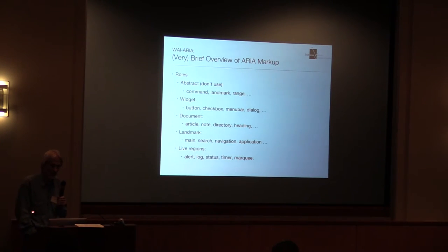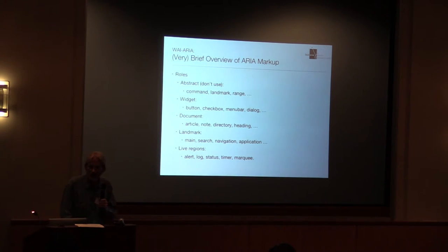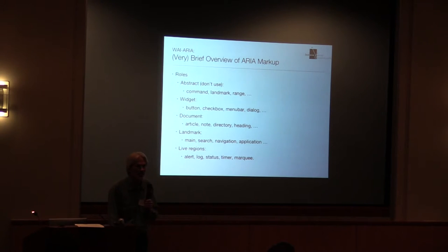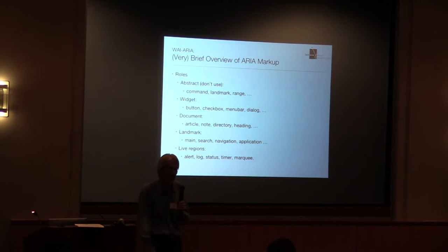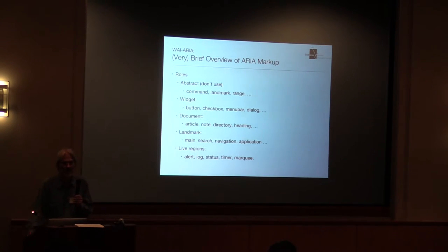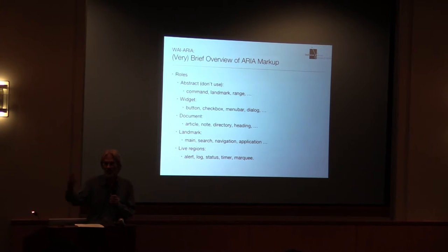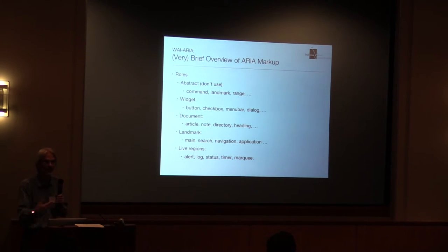For document roles: if you have a group of paragraphs constituting an article — say a wiki page — you can say that's an 'article' role rather than just a set of paragraphs. Or a couple of paragraphs that are an aside — you can mark them as 'note'. That gets communicated to the accessibility layer and the AT, providing a richer description of the page. Again, it's trying to focus in on what the author intends.